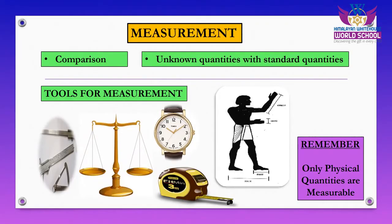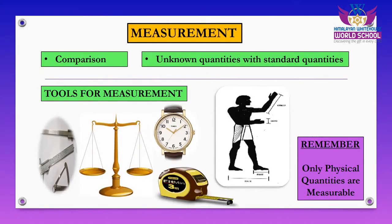Measurement is the process of comparing things. But how we compare things really matters — we need to compare things scientifically. In order to compare things scientifically, there must be something which serves as a standard value. When we compare an unknown value with this standard one, that process is known as measurement — the comparison of unknown quantities with a standard quantity.